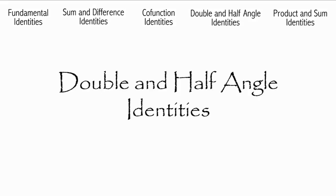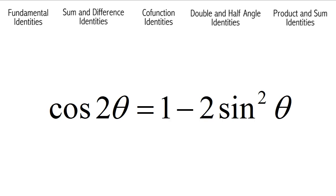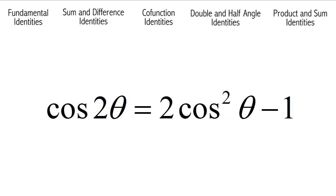Now we're going to do the double angle and half angle identities. Cosine of 2 theta is equal to cosine squared theta minus sine squared theta. Cosine of 2 theta is equal to 1 minus 2 sine squared theta. Cosine of 2 theta is equal to 2 cosine squared theta minus 1.